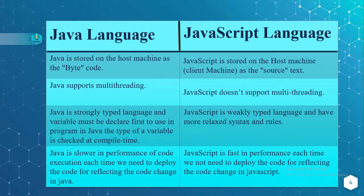Java is slower in performance of code execution. Each time we need to deploy the code for reflecting code changes in Java. Whereas JavaScript is faster performing — we do not need to deploy the code for reflecting code changes in JavaScript.